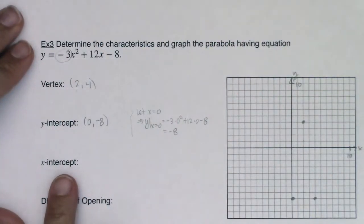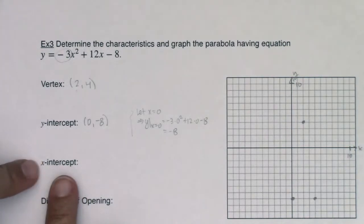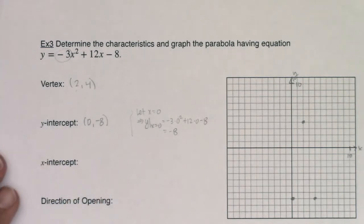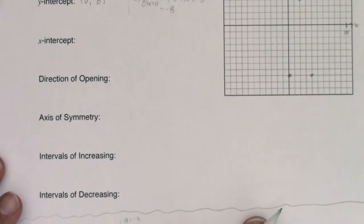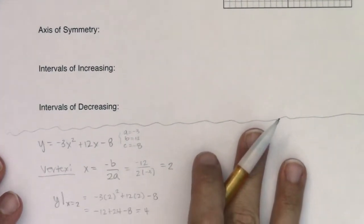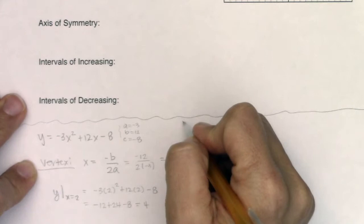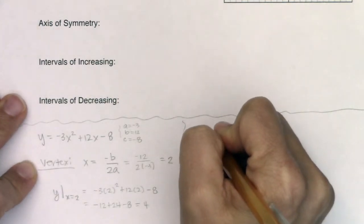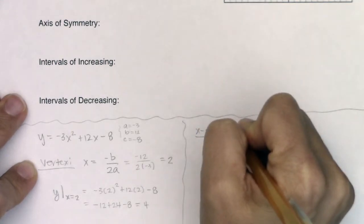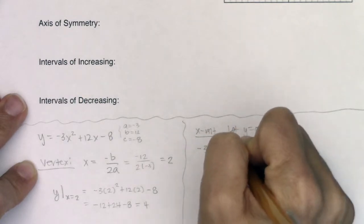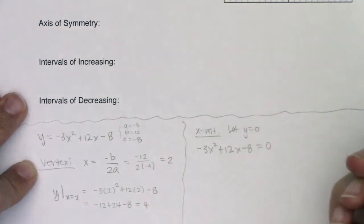The next thing I'm asked to find are the x-intercepts, which are a bit more intricate. If you want an x-intercept, you let y equal 0 — always let the opposite letter equal zero. So I want negative 3x squared plus 12x minus 8 to be equal to 0.